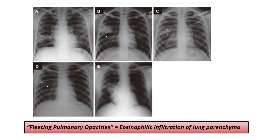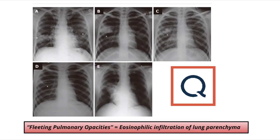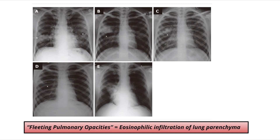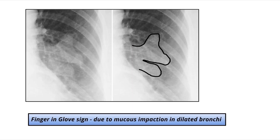Coming to certain images which can be given in questions: chest X-rays showing fleeting pulmonary opacities are due to eosinophilic infiltration of the lung parenchyma — the arrow marks are all suggestive of this characteristic finding in ABPA. Another potential image-based question is the finger-in-glove sign, caused by mucus impaction in dilated bronchi, which is very typical of ABPA.